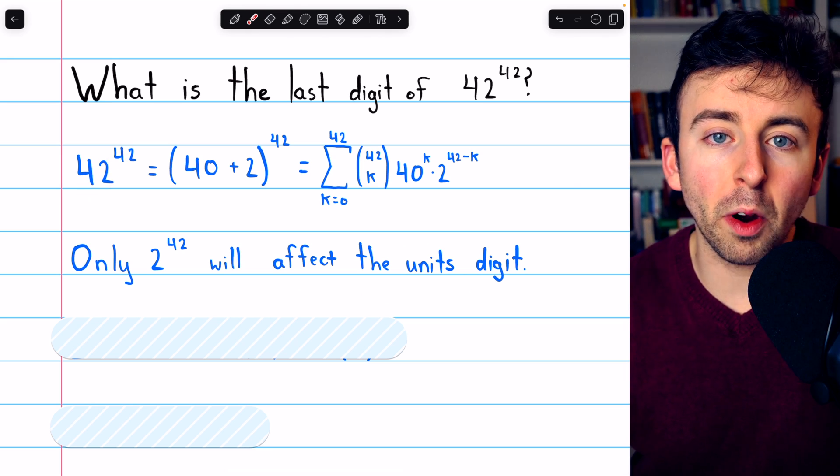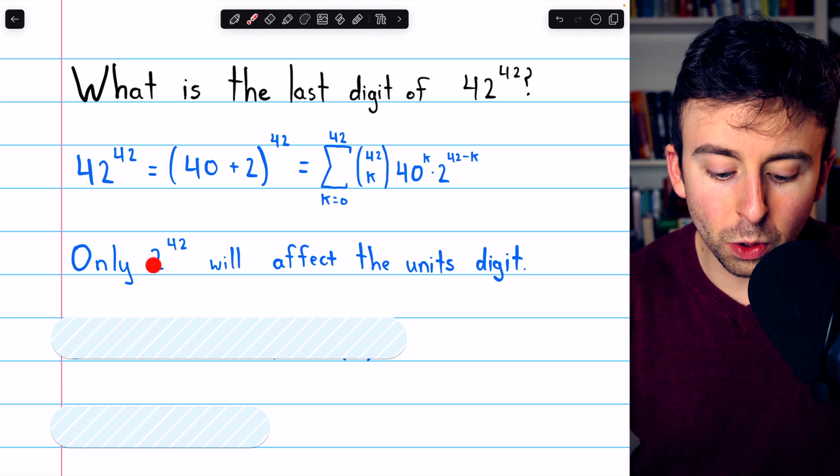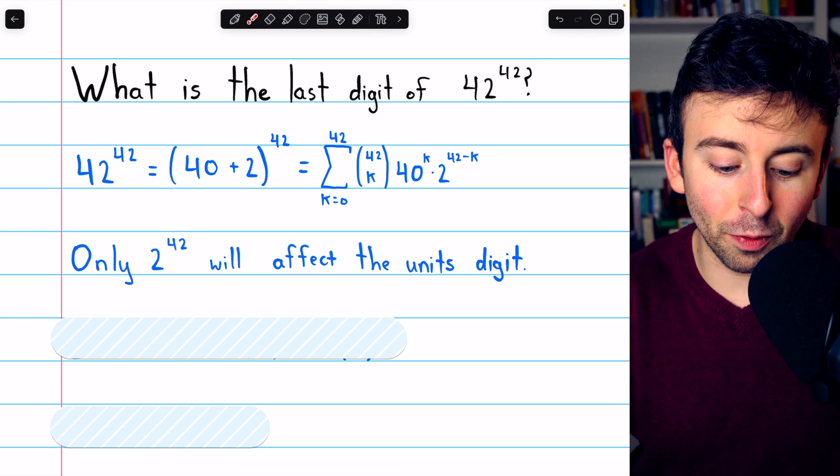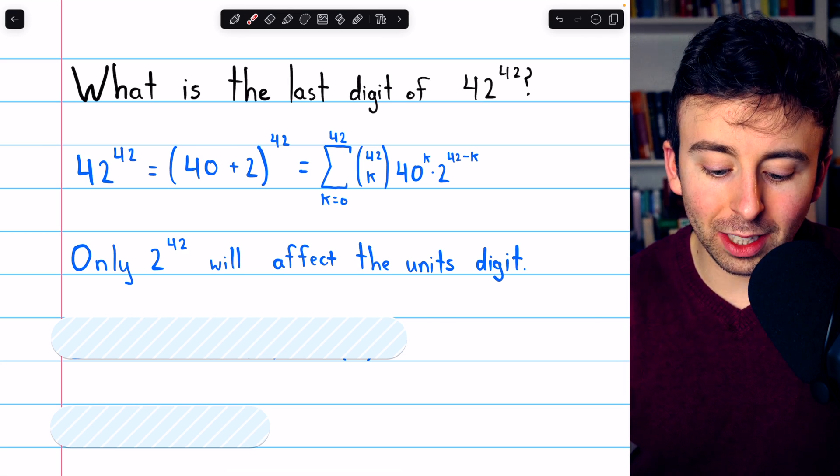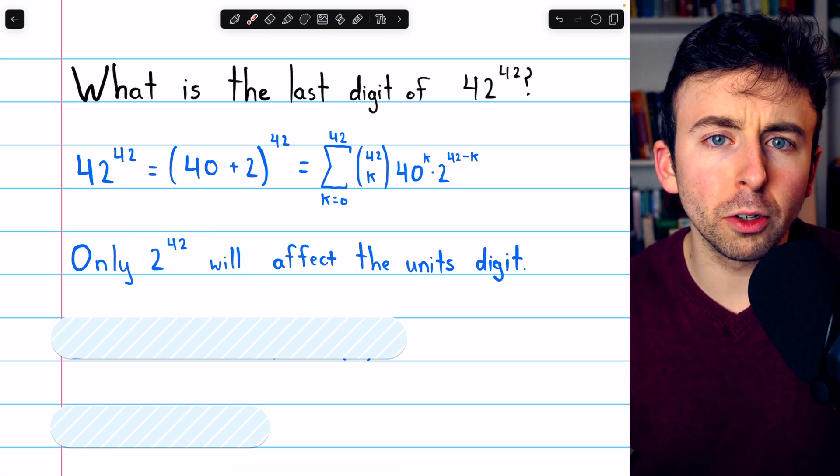All right, so that's great. We've already broken the problem down to 2 to the 42 instead of 42 to the 42. That's a whole lot more manageable. Now, let's break this down into some smaller powers.